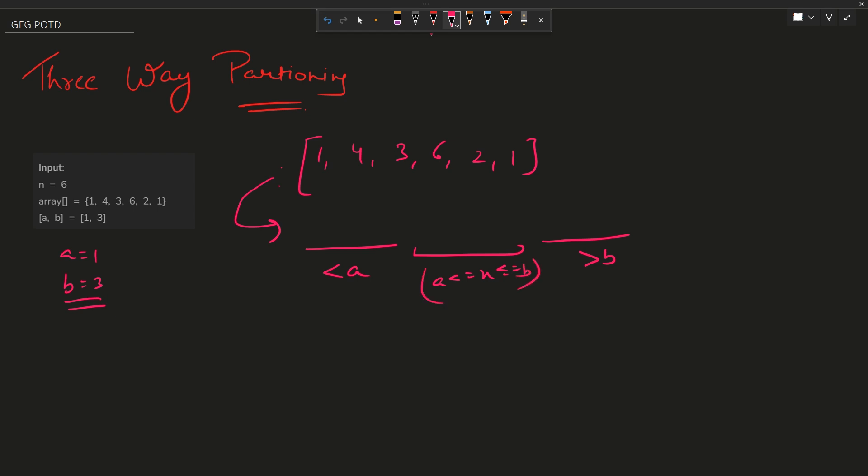One such combination: if I see one, I can say one, one - these two ones are placed. All the elements greater than b are four and six, so four, six. And the remaining elements are two and three, so two, three. One combination is [1, 1, 2, 3, 4, 6].